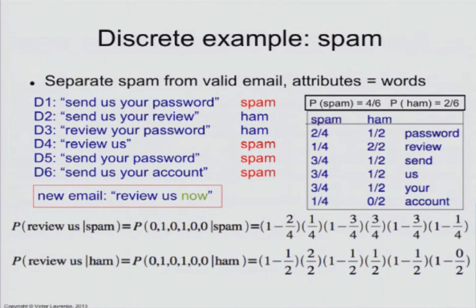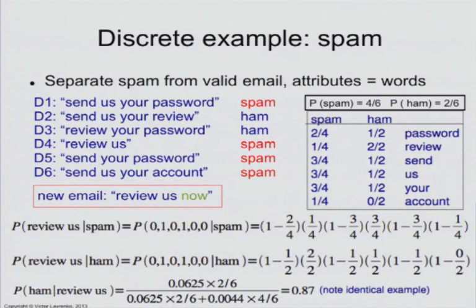Next, you do the same exact thing for the non-spam class using the same binary string, but now using the second column of the table. The word 'password' didn't occur, so it's one minus one-half. The word 'send' didn't occur, again one minus one-half. The word 'review' occurred, so you have probability of one. Compute all of those, you get two numbers. Then the last thing you do is multiply by the priors — one-third and two-thirds — plug it into Bayes' rule, and you get your prediction.